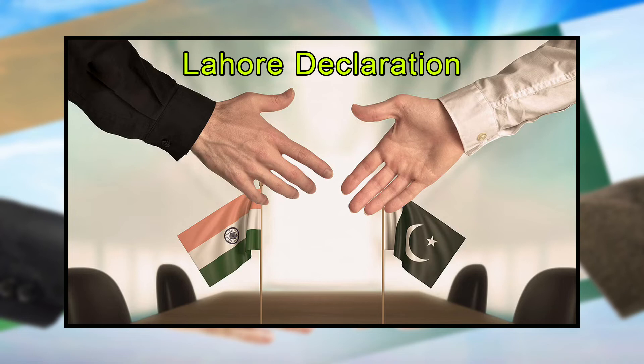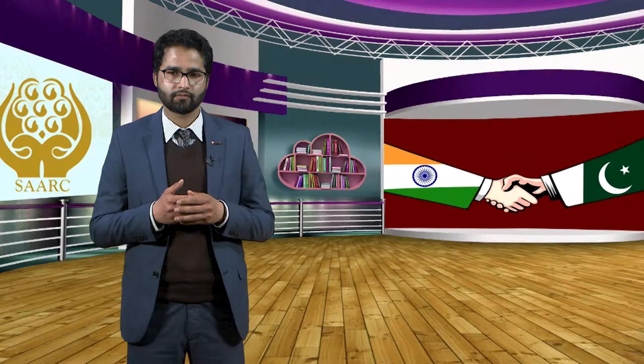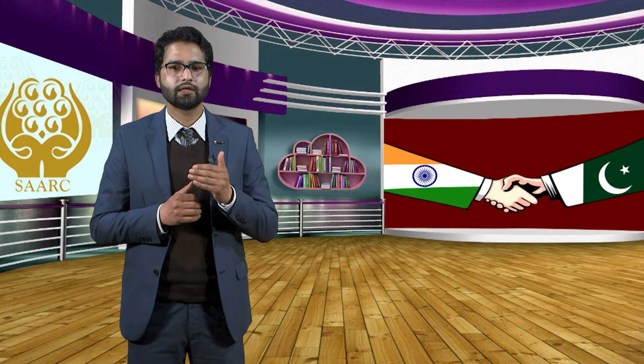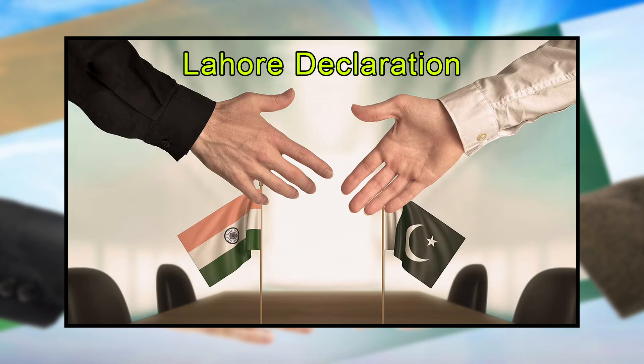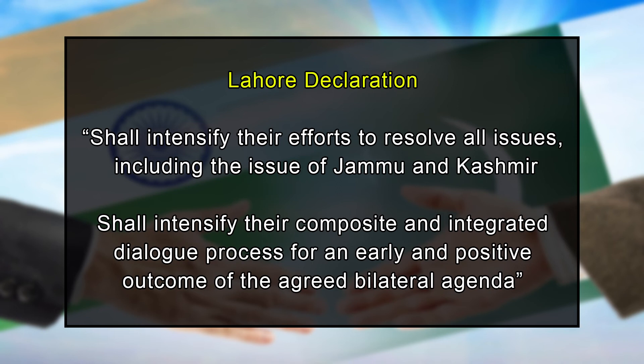The May 1998 nuclear tests by India and Pakistan posed a challenge to the peace process, but the situation was diffused after the signing of the Lahore Declaration in February 1999. The Lahore Declaration reaffirmed the earlier India-Pakistan non-attack agreement signed in December 1988 to control the nuclear arms race in South Asia and to prevent accidental attack on nuclear sites. More broadly, both sides agreed that their respective governments 'shall intensify their efforts to resolve all issues including the issue of Jammu and Kashmir' and shall intensify their 'composite and integrated dialogue process for an early and positive outcome of the agreed bilateral agenda.'